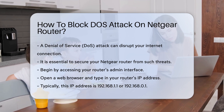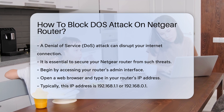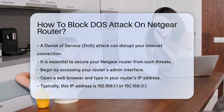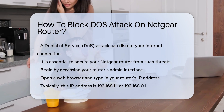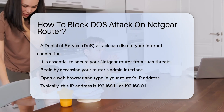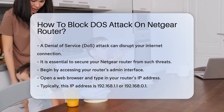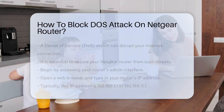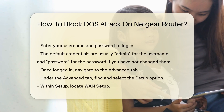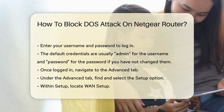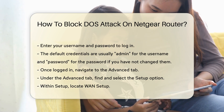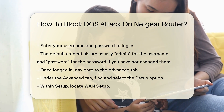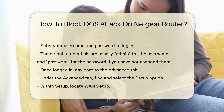Begin by accessing your router's admin interface. Open a web browser and type in your router's IP address. Typically, this IP address is 192.168.1.1 or 192.168.0.1. Enter your username and password to log in. If you have not changed it, the default credentials are usually admin for the username and password for the password.